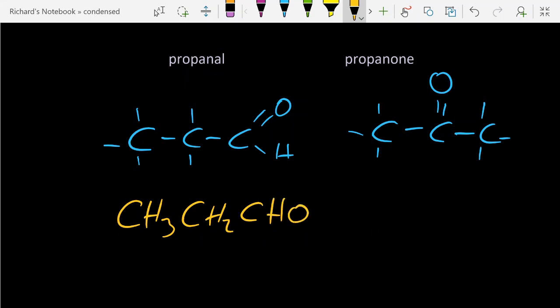For the ketone: CH3, CO, CH3. You might be tempted to put in a little double bond here, but that's a mistake. You're not supposed to show any bonds in these condensed structural formulas.